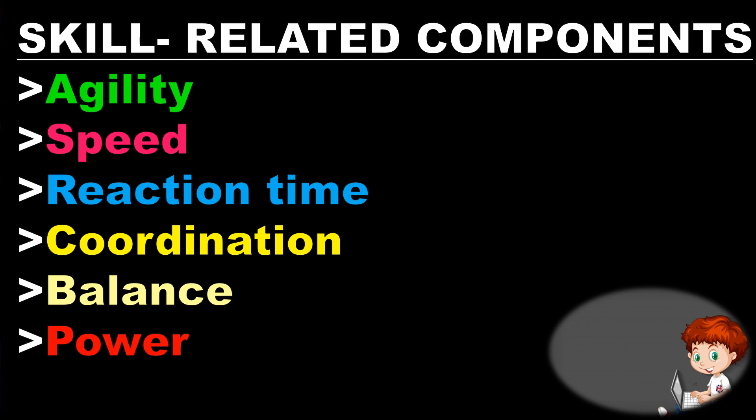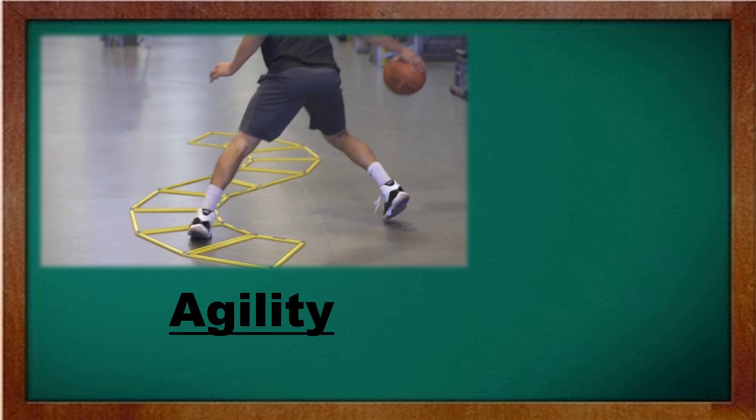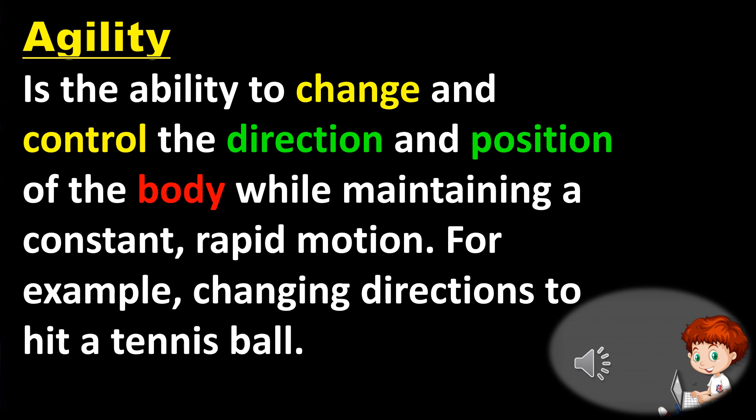Under skill-related components, we have agility, speed, reaction time, coordination, balance, and power. Agility is the ability to change and control the direction and position of the body while maintaining a constant, rapid motion — for example, changing direction to hit a tennis ball or a ping pong ball in table tennis. Balance is the ability to control or stabilize the body when standing still or moving, such as in inline skating or performing bike tricks.